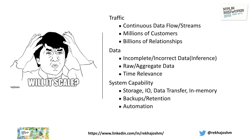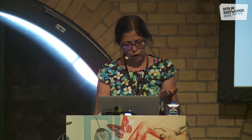System capability is critical — you have to think about storage, sharding, how nodes are interacting with each other, data transfer, and in-memory processing. In-memory is also a recent advancement but it is important. How much data should you retain? Sometimes data loses value. Near data is more important than historic data, but in some cases historic data is equally important. Automation — all these things come into play.